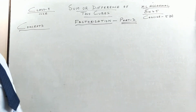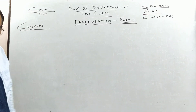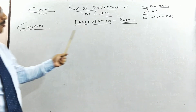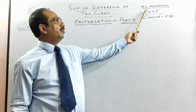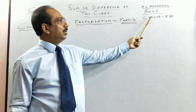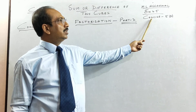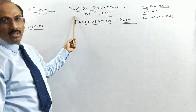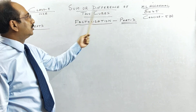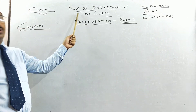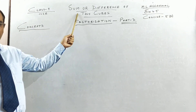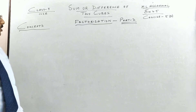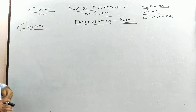Hello students, we start chapter Factorization Part 7. We are doing Exercise 4.5 of M.L. Agrawal's book. If you are using Concise, it is Chapter 5D, Exercise 5D. Today we are doing a new topic: sum or difference of two cubes. We use these formulae to factorize an algebraic expression. So we start with the concepts.